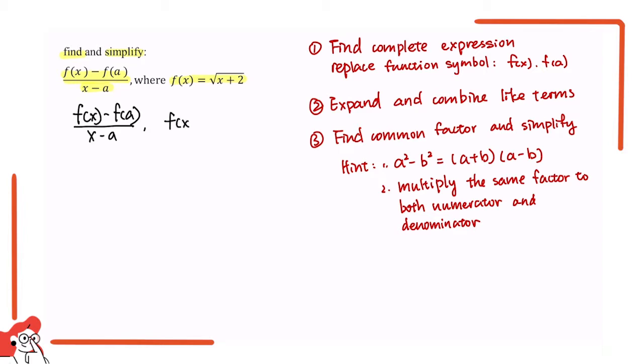And here we have f(x) equals square root of x plus 2. And we can get f(a) by plugging in a into the function f(x). So we have square root of a plus 2. And then we can put f(x) and f(a) back into the big expression.